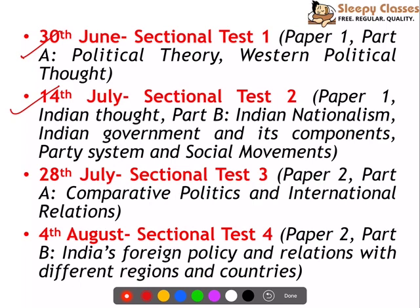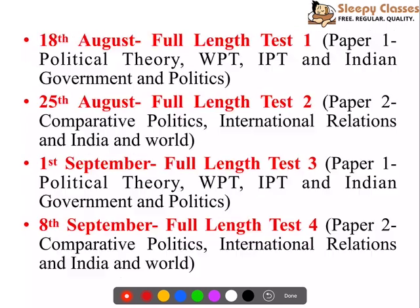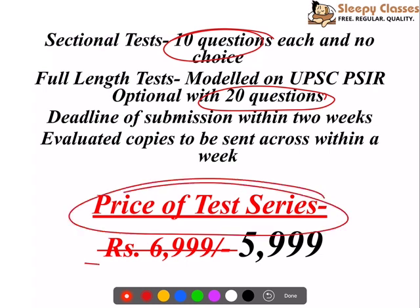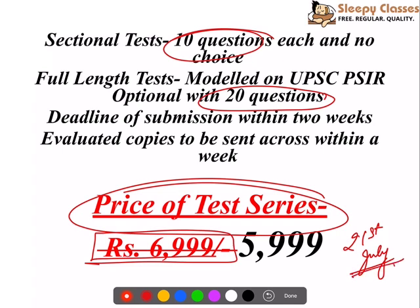तो आप अपने हिसाब से इस timetable को revise करके लिख सकते हैं। Sectional tests के अंदर 10 questions होंगे, full end tests के अंदर 20 questions आएंगे। जैसे ही आप course access करते हैं, within 2 weeks आप अपने answers भेजने शुरू कर सकते हैं, और evaluated copies आपको वापस भेजी जाएंगी। इस test series की price 6,999 थी जो कि Sunday, 21st July तक 5,999 पर available है। Thank you — अपने optional पर ध्यान देते रहिए और continuously prepare करते रहिए, क्योंकि यह mains clear करने के लिए बहुत ज़्यादा ज़रूरी है।